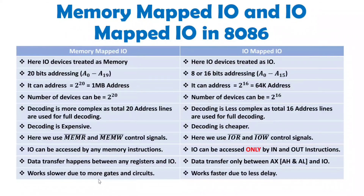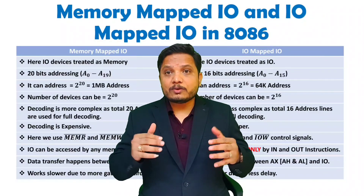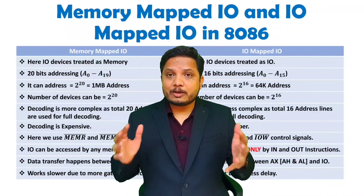With Memory Mapped I/O, there is a larger circuit in terms of gates and decoders, so it works slower. With I/O Mapped I/O, the circuit has fewer gates and decoders, so it works faster due to less delay — fewer devices and less complexity in decoding hardware. This covers all the basic differences between Memory Mapped I/O and I/O Mapped I/O. Post any confusion in the comment box. Thank you for watching.